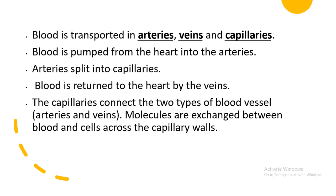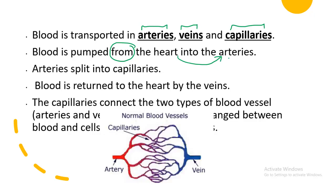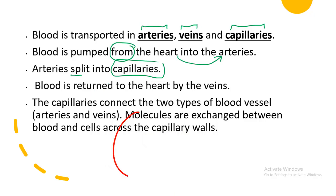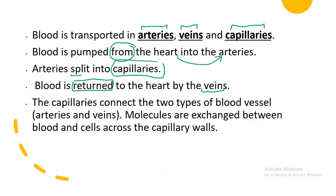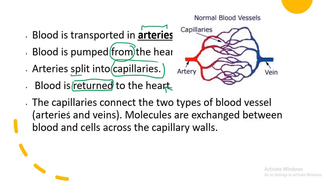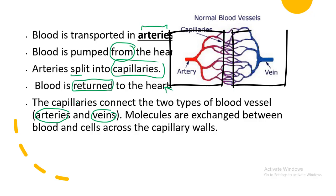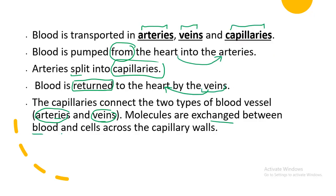Blood is transported in tubes called arteries, veins, and capillaries. Blood is pumped from the heart into the arteries. These arteries carry blood and split into capillaries, which eventually become veins, and blood is returned to the heart by veins. The capillaries connect two blood vessels — the artery and the vein — and molecules are exchanged between blood and the cells.